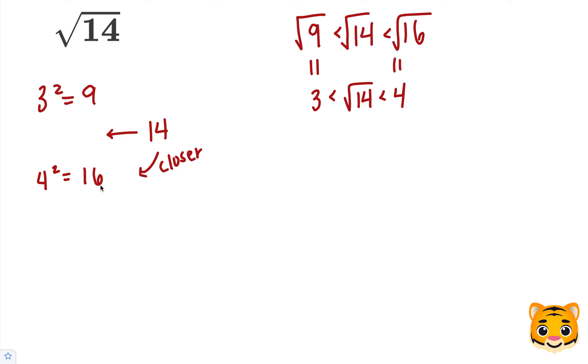Now we know that 14 is closer to 16, so we can try out values between 3 and 4 that are closer to 4 in order to find a number that multiplies by itself to get 14.